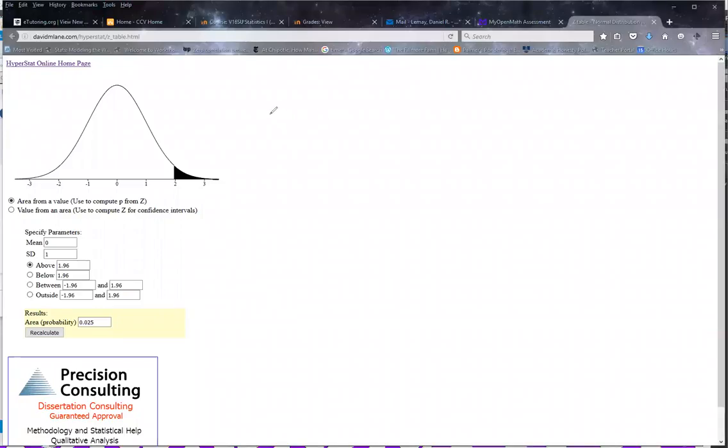Suppose I want to find probabilities but I don't have a calculator and I don't want to use a normal curve table. We can also use this applet here. Suppose I'm looking for the probability of getting a z-score that's less than 1.13.